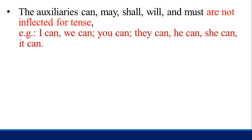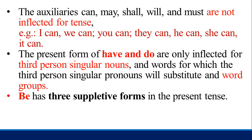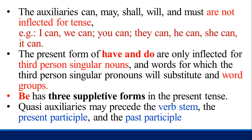The present forms of have and do are only inflected for the third person singular nouns and words for which the third person singular pronouns substitute. B has three suppletive forms in the present tense. Quasi-auxiliaries may precede the verb stem, the present participle, and the past participle.